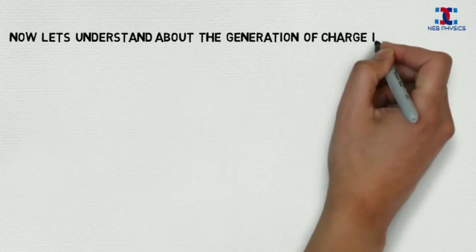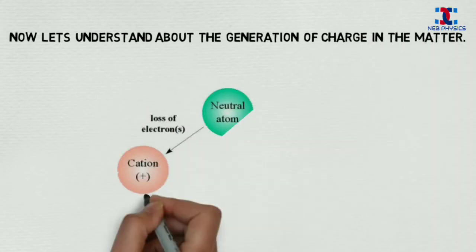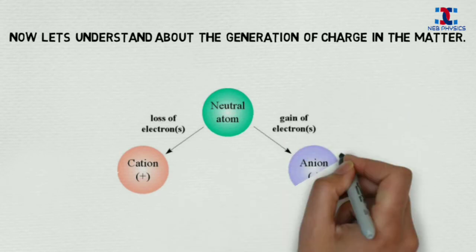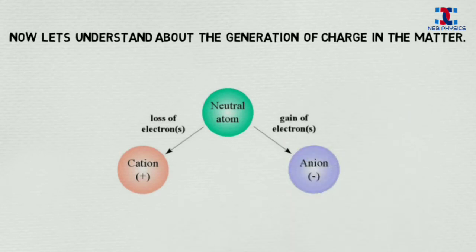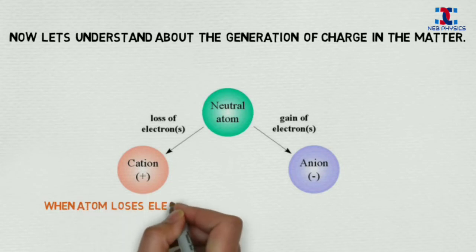Now let's understand about the generation of charge in the matter. Generally, an atom is neutral because it has equal quantity of positive and negative charges.